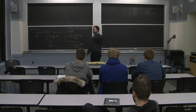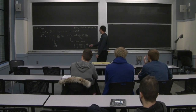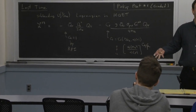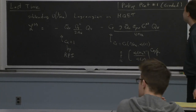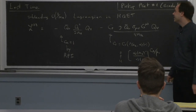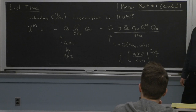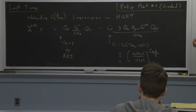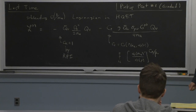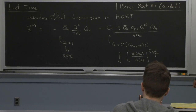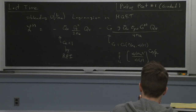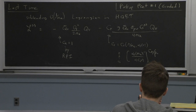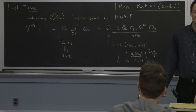So last time we were talking about the subleading 1 over MQ Lagrangian in HQET. Today we're going to continue this discussion of power-suppressed Lagrangians, explain why we think of these as giving power corrections to observables, talk about observables where these specific operators play an important role, and then we're going to turn to the topic of renormalons, which is fun stuff.